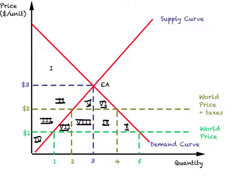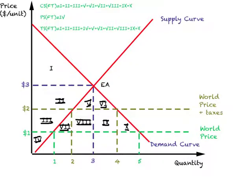Now let us figure out the welfare consequences of imposing a tariff and compare that outcome to what we would have under free trade. We are trying to figure out whether commercial policy gives us a superior outcome relative to free trade. To do that we have to figure out consumer surplus, producer surplus, and other surpluses. I have labeled the diagram into different parts — each Roman numeral represents the area of the figure in which it is enclosed.